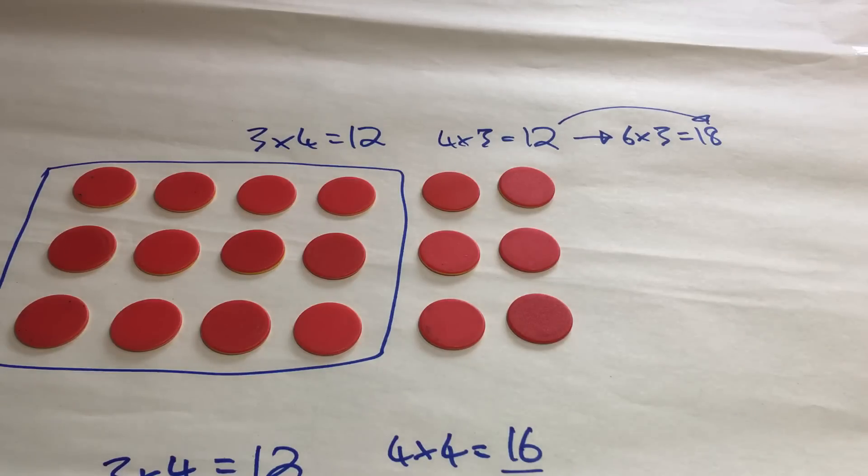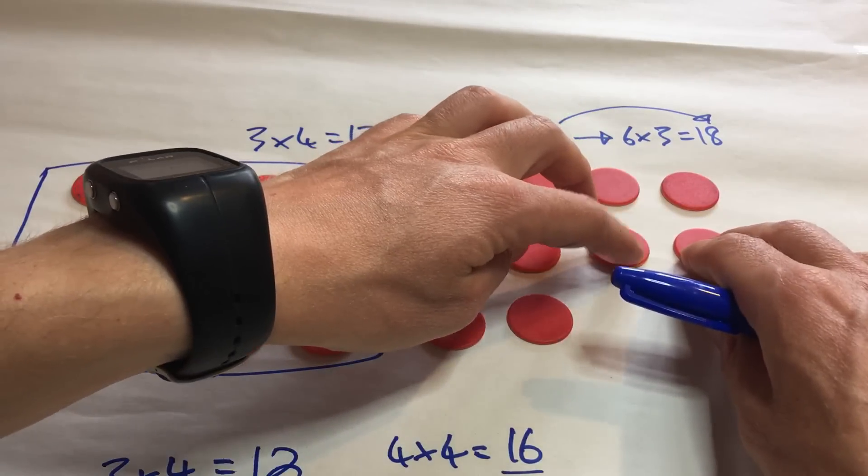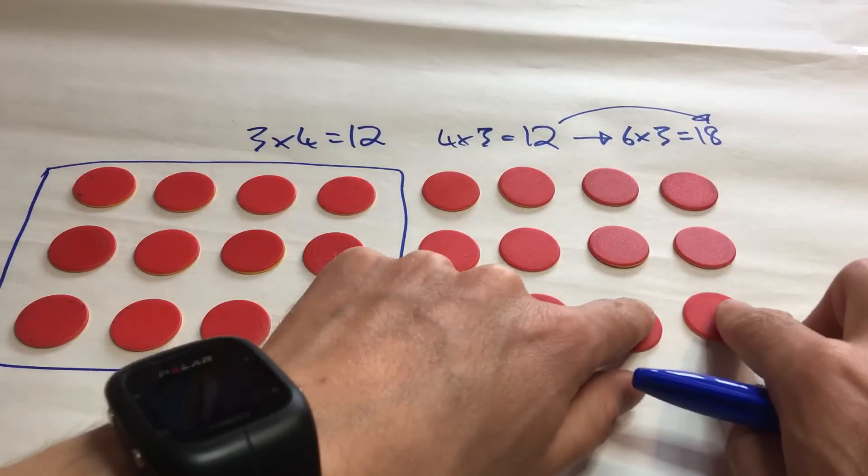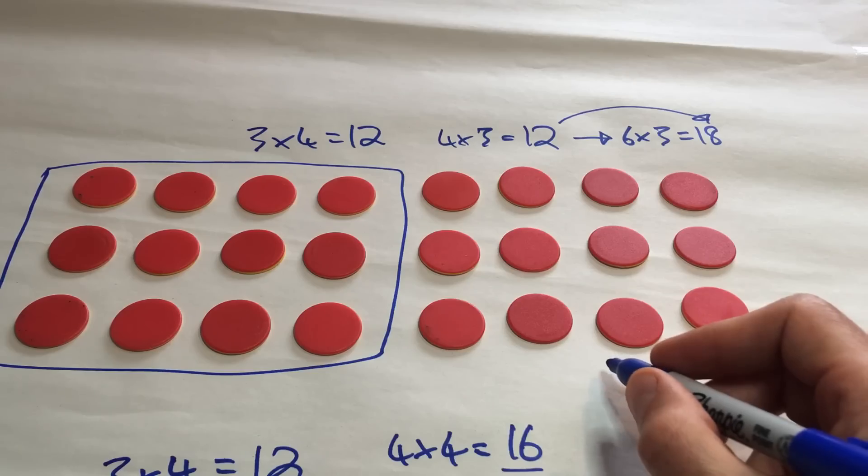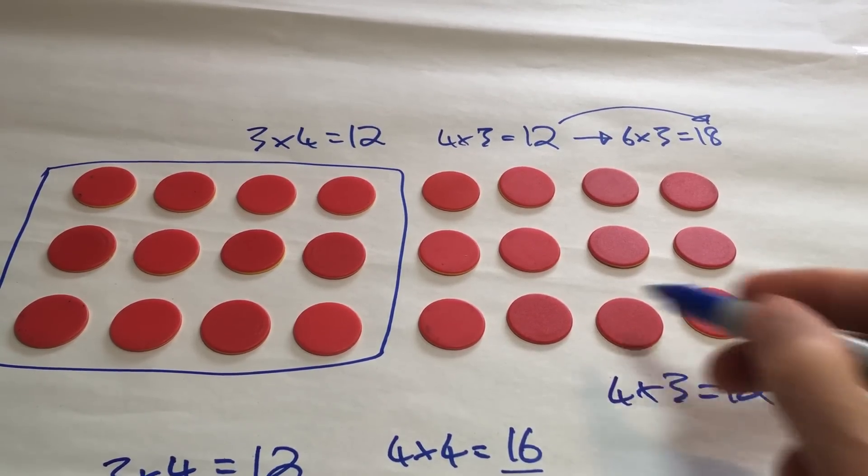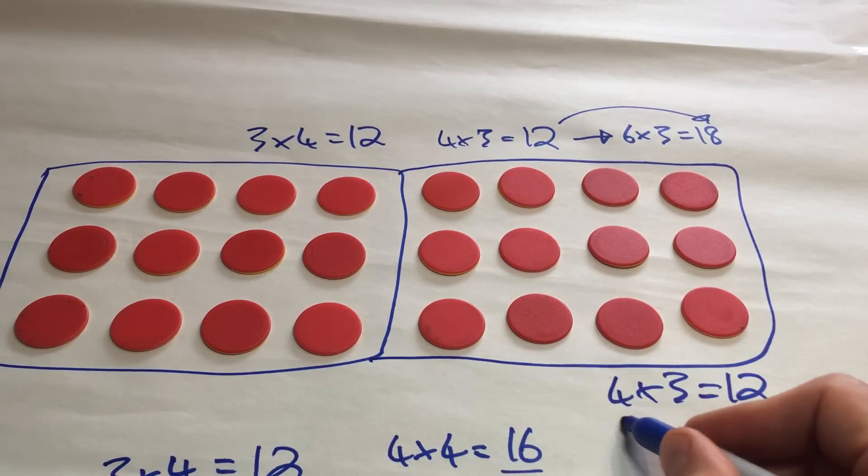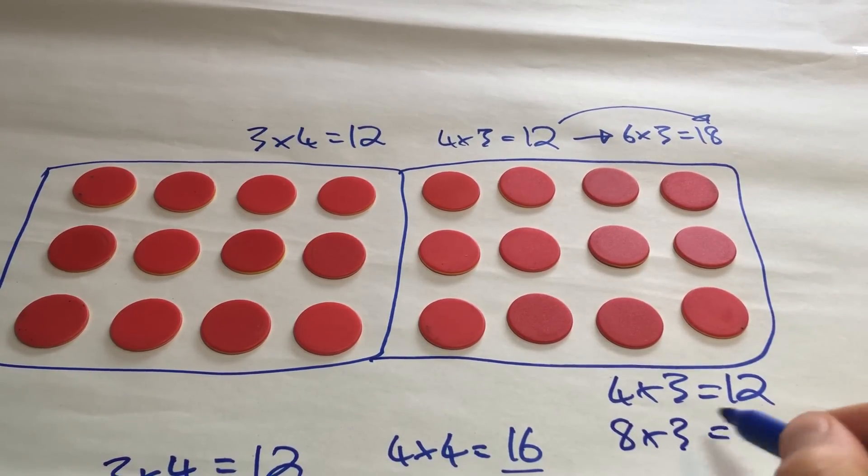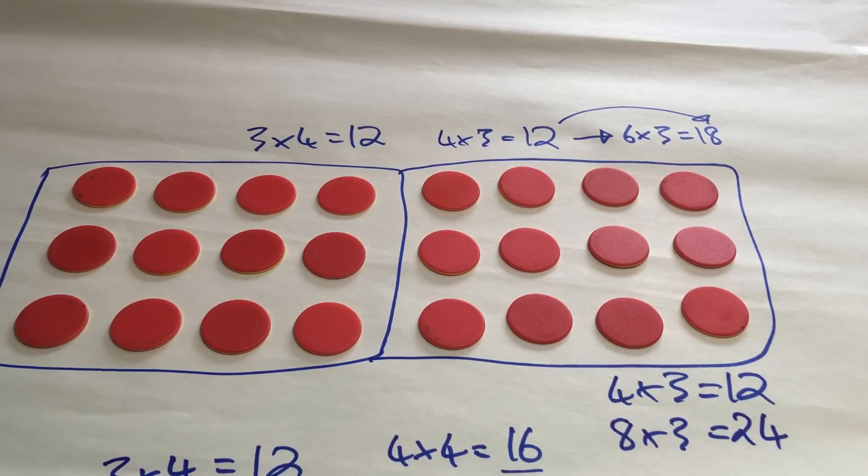OK, now what about instead of... So here is 4 lots of 3. How about if I double that? So let's have a look. So, let's see if I can fit this in. So, we've got 4 lots of 3 is 12. And if I double that, I have 8 lots of 3. And 8 lots of 3? Well, it must be double 4 lots of 3. It must be 24.